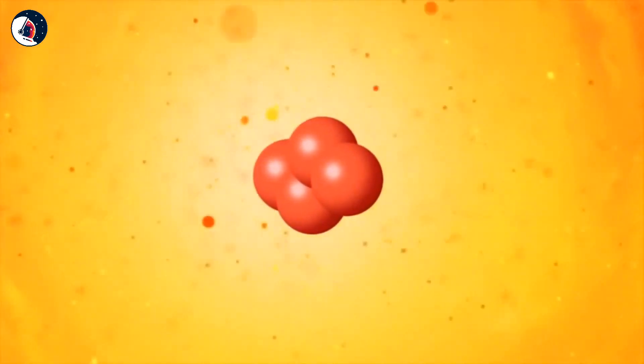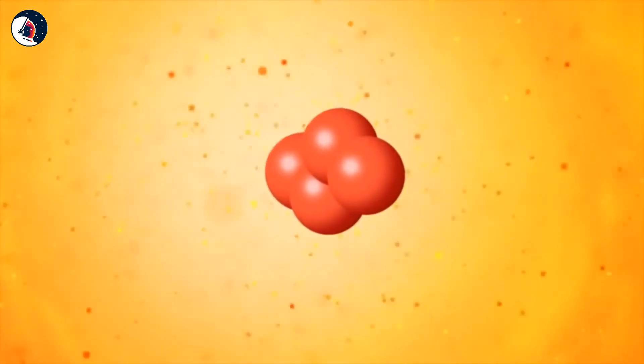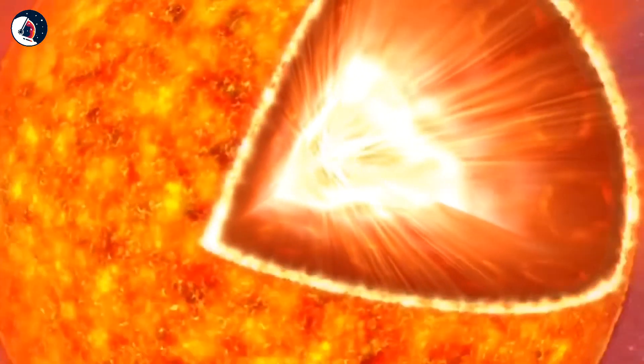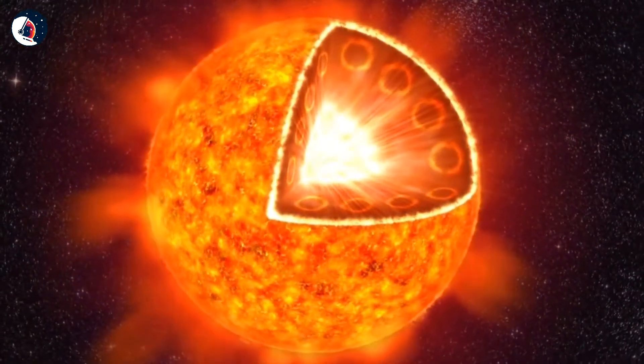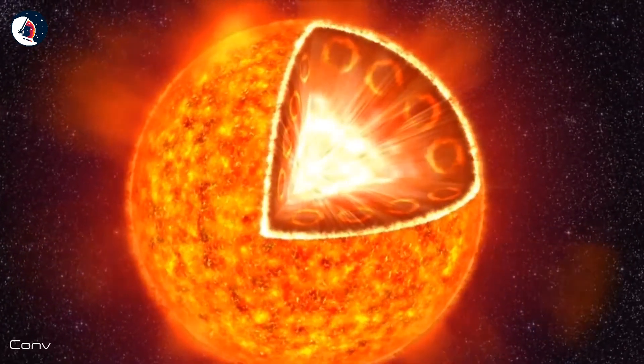The light radiates outward from the core of the Sun. In the outer layers, the heat moves to the surface in huge eddies called convection cells.